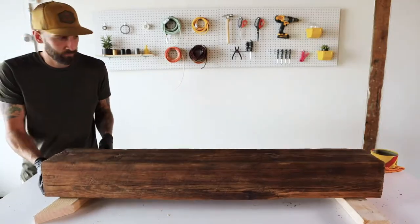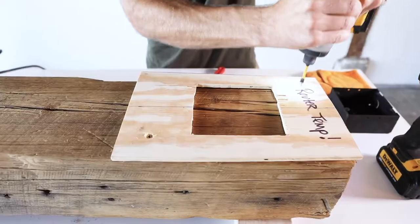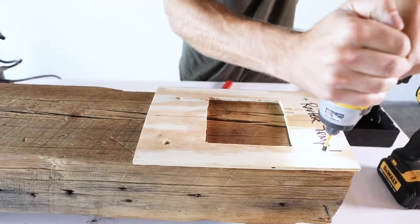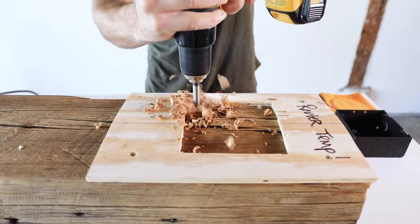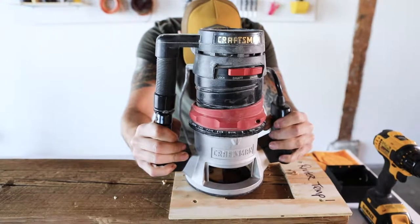From here, we're routing out a section on the top of the beam so we can secure a junction box inside the beam. The result is a cleaner look with no J-Box sitting on top of the beam.